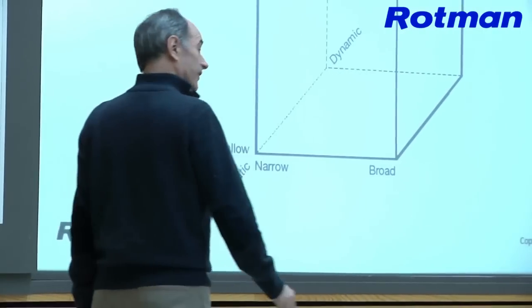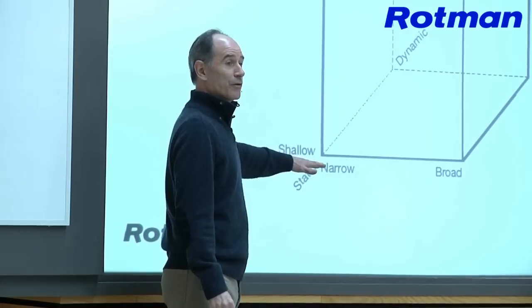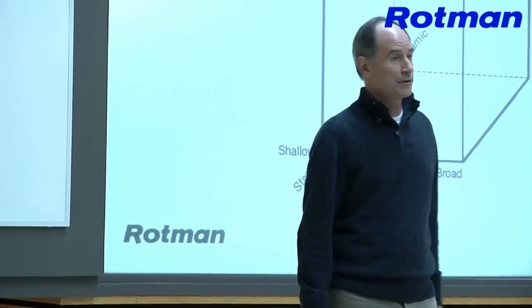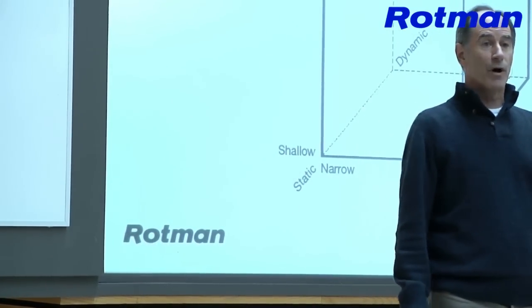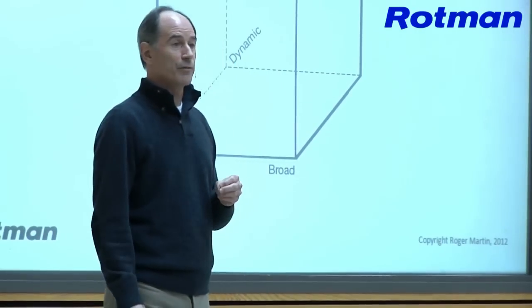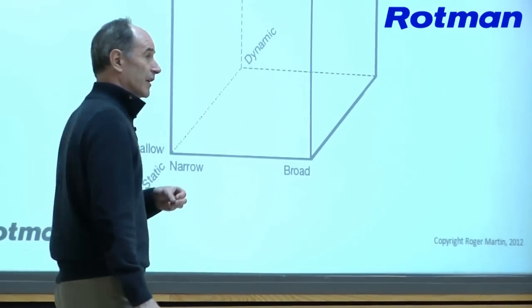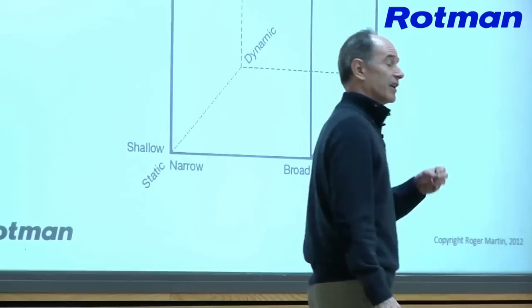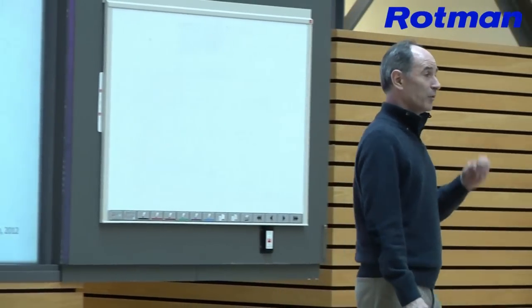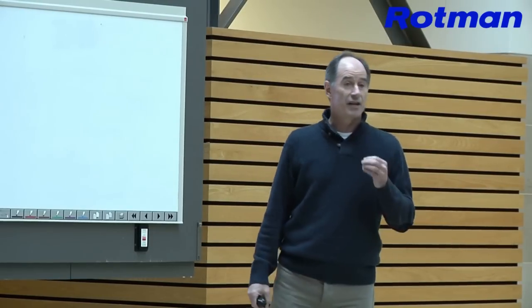I think it's because business education spewed out a whole bunch of people who have a shallow understanding of the models that they were taught, not a deep understanding of the models they were taught. So they over apply these models, and they can over apply these models in ways that can have disastrous consequences for economies, because I think a whole lot of that went on in 2005, six, seven, eight.